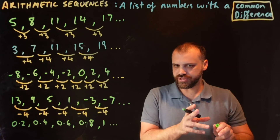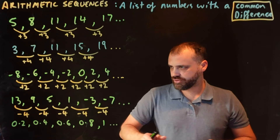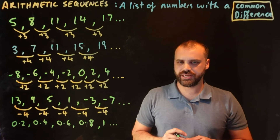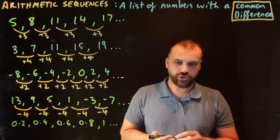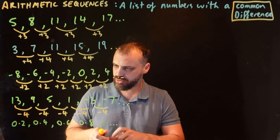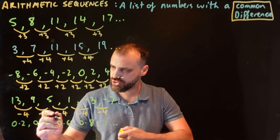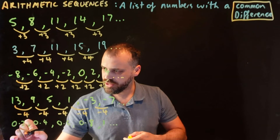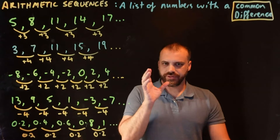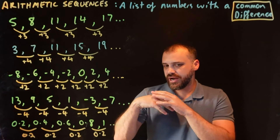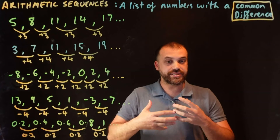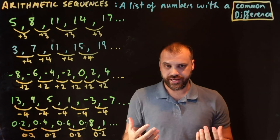Last one before we move on to something a little bit different. This is an arithmetic sequence with a common difference of 0.2 each time. This is fantastic because arithmetic sequences are really easy to create.